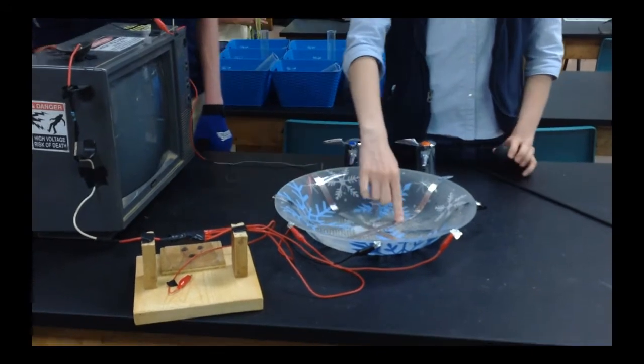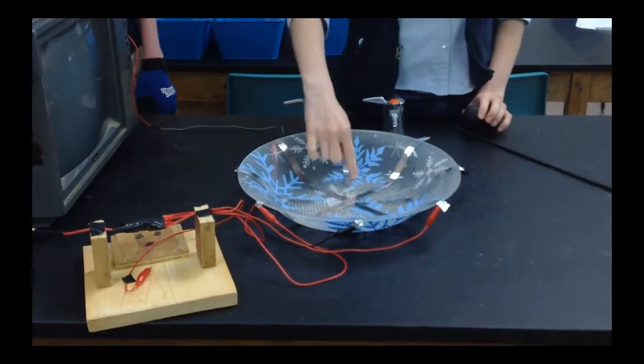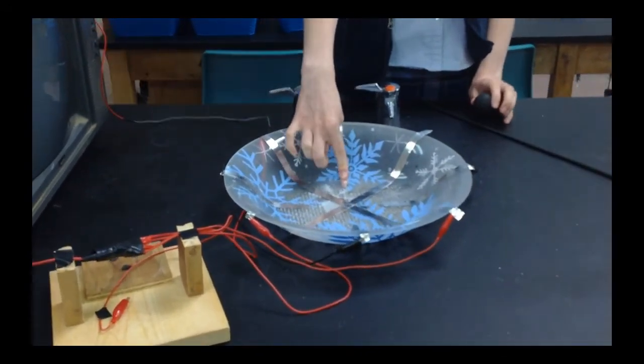The cross right here is charged positively, and then these four are charged, they're neutral, they're grounded.